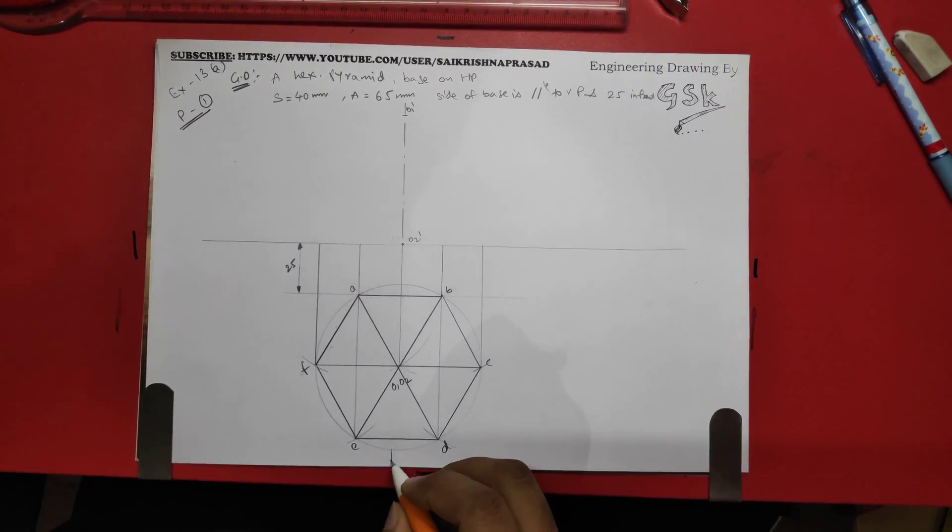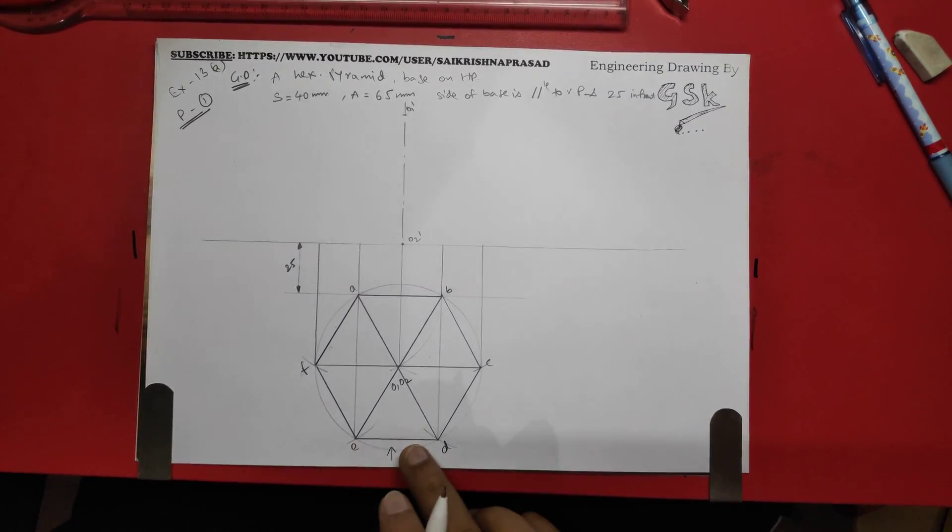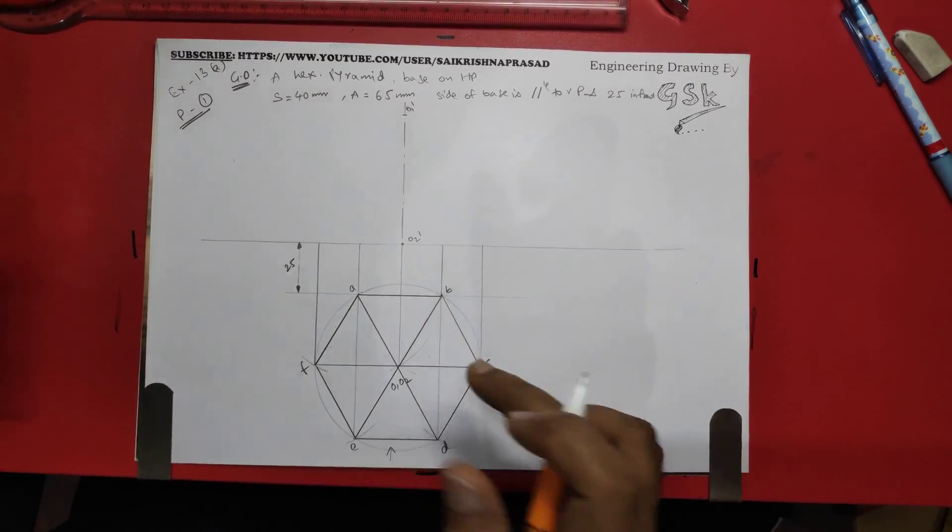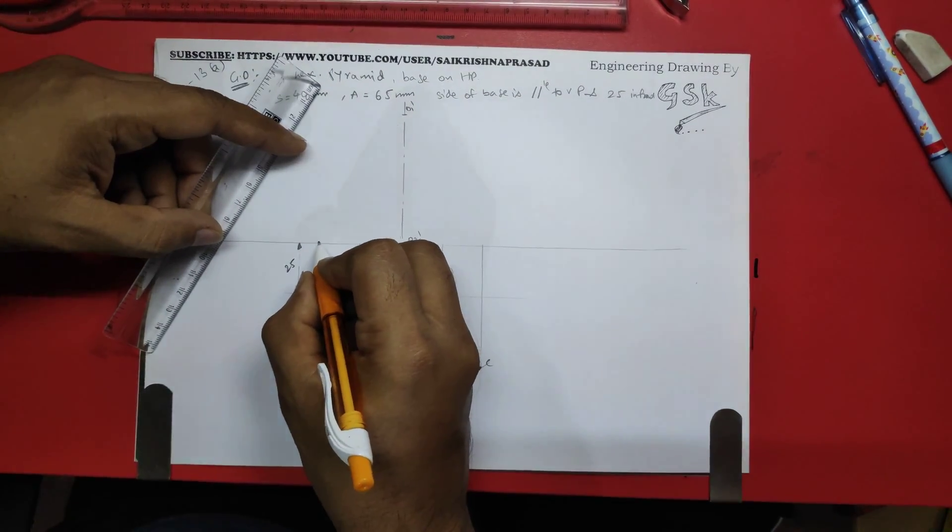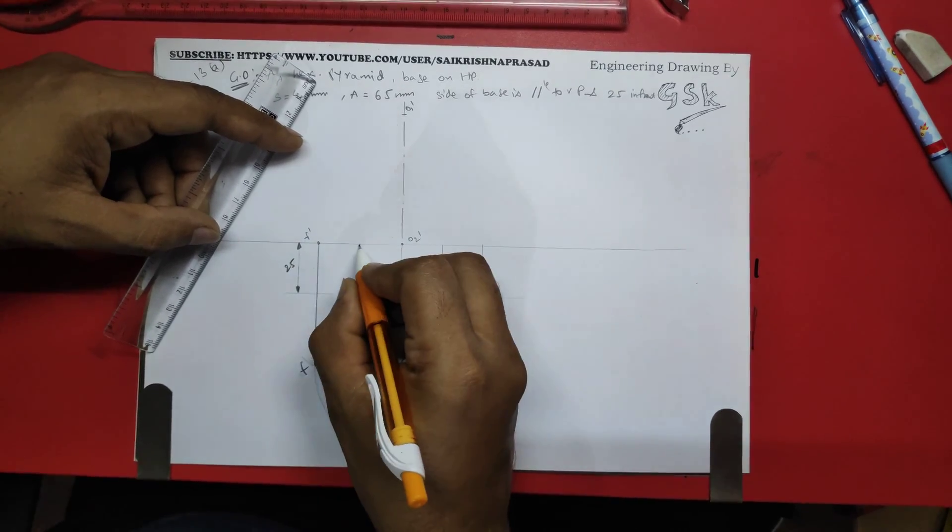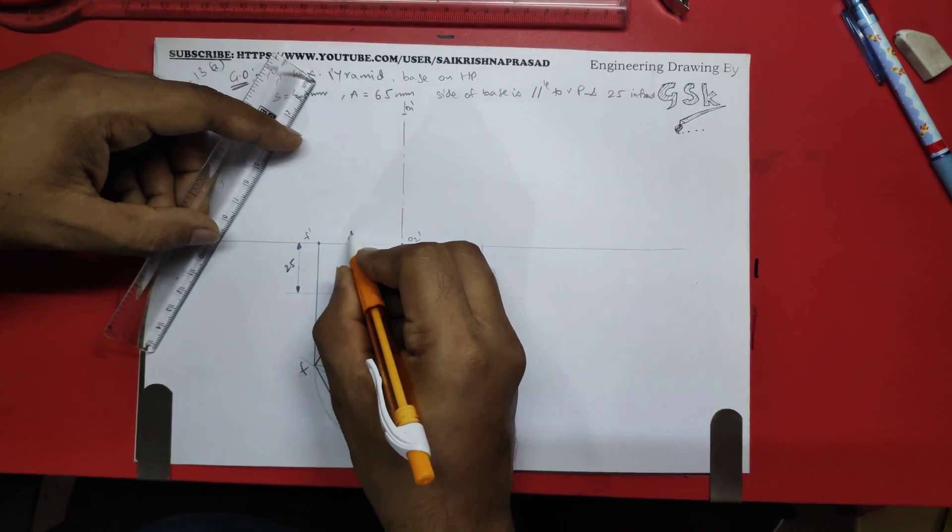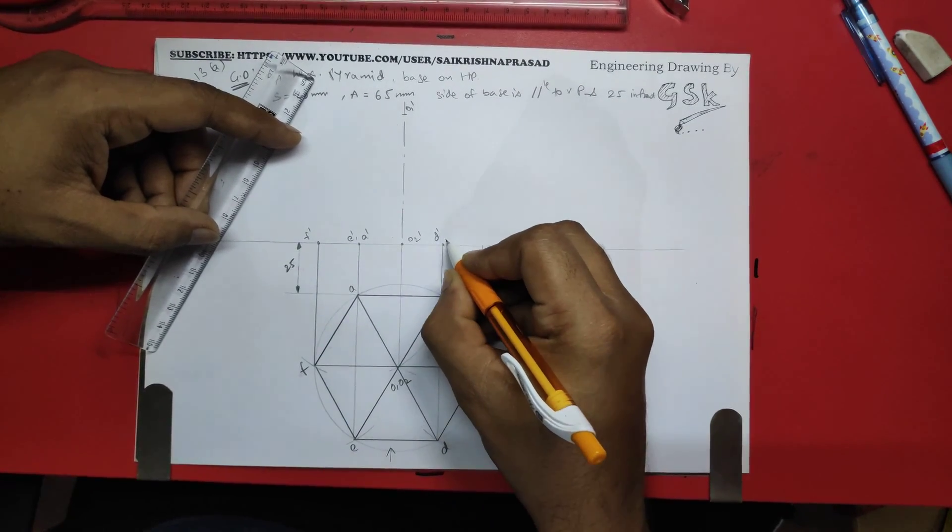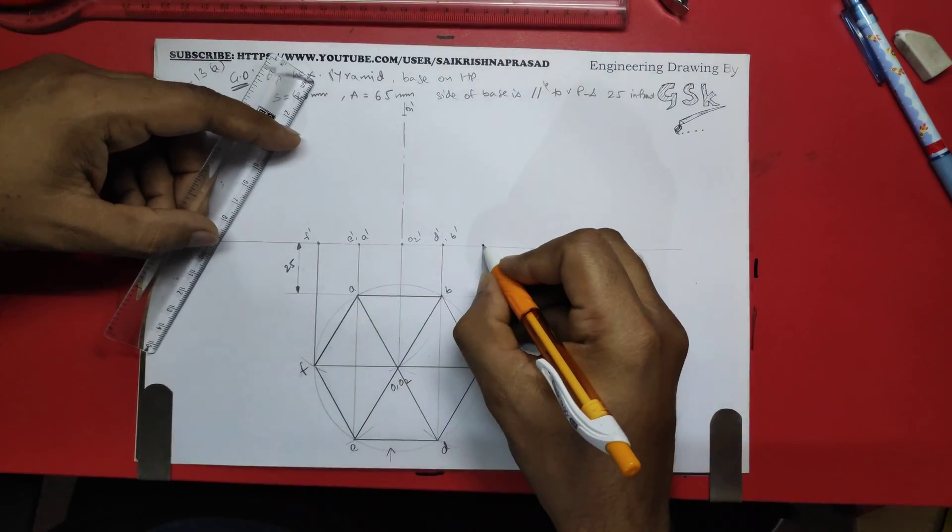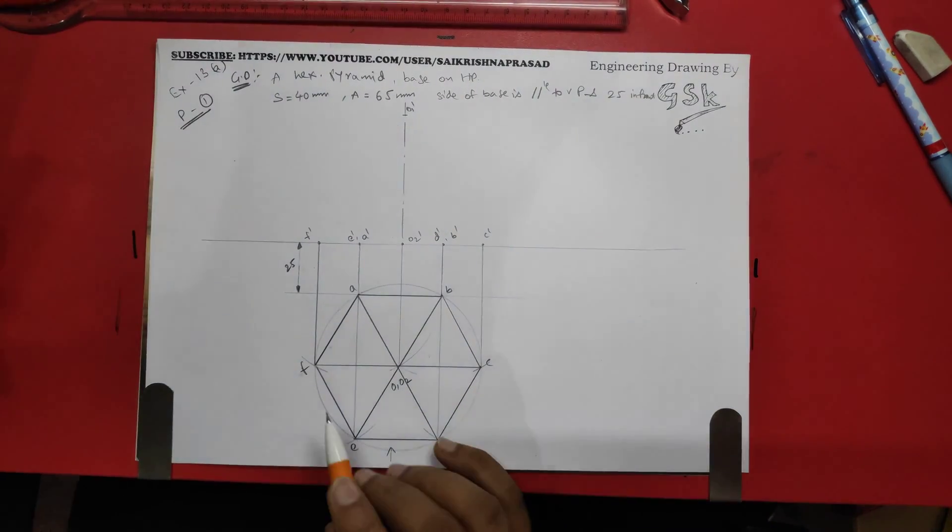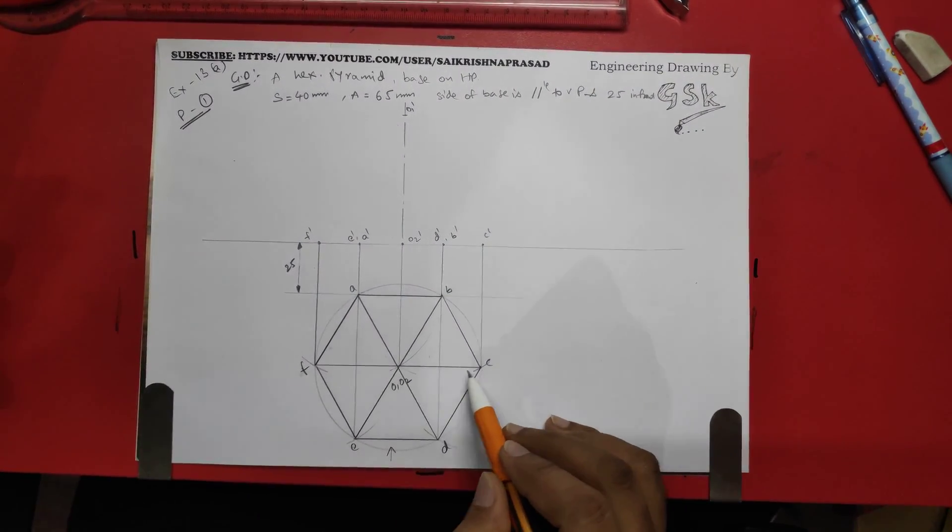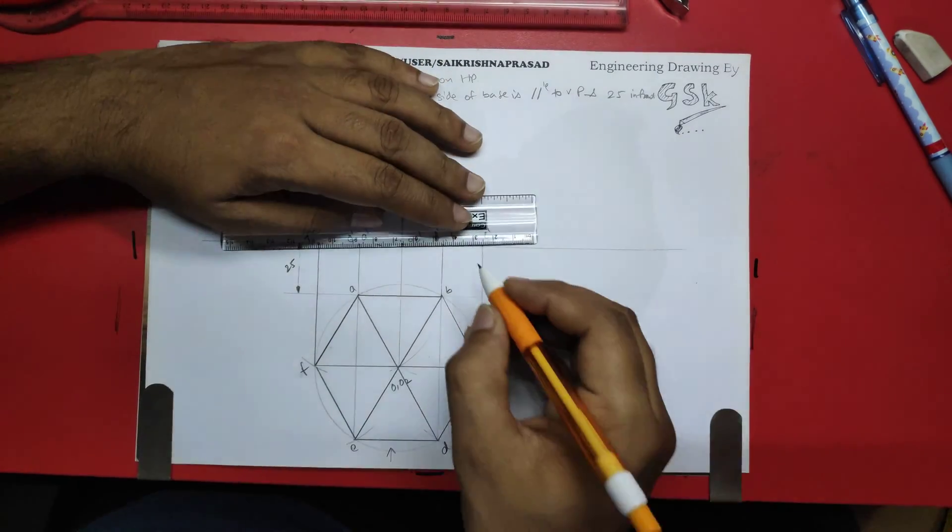In this direction you can see this surface, this surface, and this surface. You can't see these three surfaces. So here this would be f dash, e dash, a dash, d dash, b dash, and this one would be c dash. So we can see f o1, e o1, d o1, c o1, and we can see the base obviously.